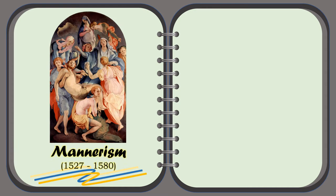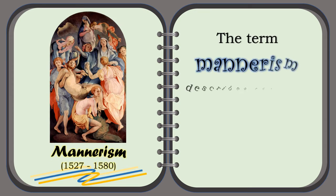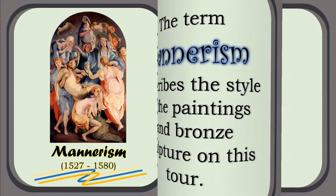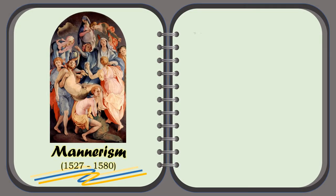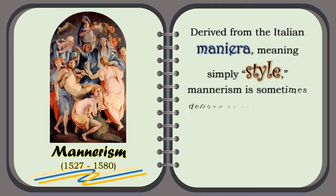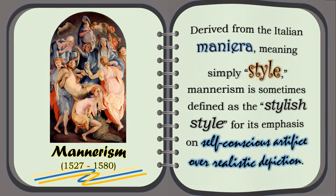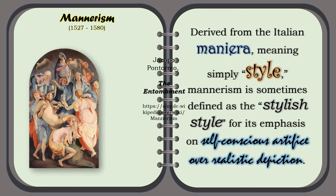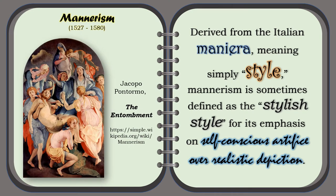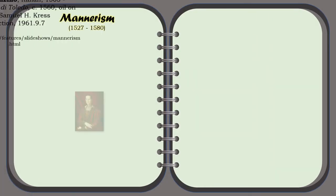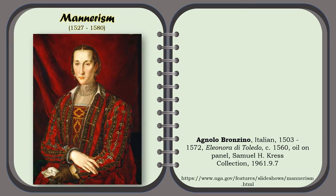The Mannerism. The term Mannerism describes the style of the paintings and bronze sculpture on this tour. It is derived from the Italian 'maniera,' meaning simply style. Mannerism is sometimes defined as the stylish style for its emphasis on self-conscious artifice over realistic depiction. For example, the artwork of Jacopo Pontormo, The Entombment. Another example of Mannerism painting is the Eleonora di Toledo, an oil painting painted by Agnolo Bronzino, an Italian.